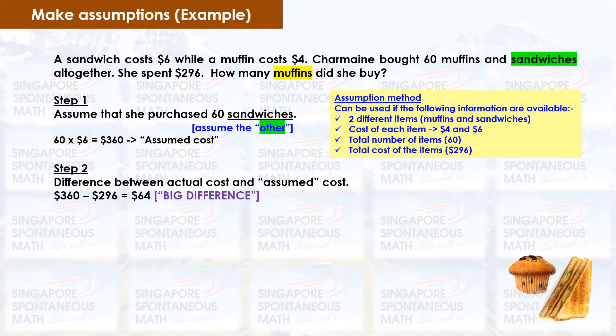Step 2: Find the difference between the actual cost and our assumed cost. $360 minus $296 equals $64. Let's call this the big difference.